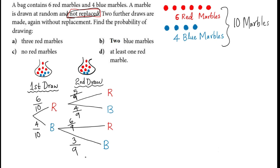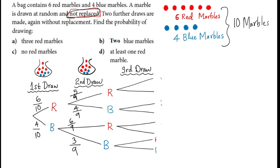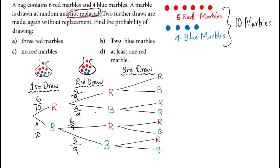I hope the concept is clear so far. Moving on to the third draw — you can draw the branches first, again with outputs red and blue. By now you should see the pattern: after each draw the total reduces by one, and every time a red marble is picked, the total of red marbles also falls. So it was six, then five, now four. So the probability is four over eight, with the remaining probability also four over eight. If the previous branch gave blue with probability four over nine, the next probability for blue is three over eight.